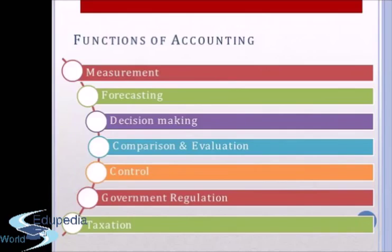Number 3 is Decision Making. The financial statements provided through accounting help us in making various rational decisions. Both internal users — the management and owners — and external users can make better decisions. The management can decide what changes to make to earn better profits or to bring the business back into profit if running at a loss. The financial statements help internal as well as external users to make rational decisions.